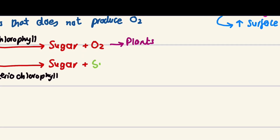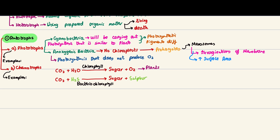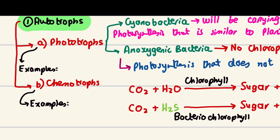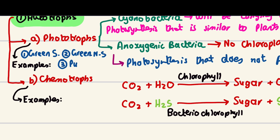Remember that sulfur is produced as a byproduct. For examples of anoxygenic photosynthetic bacteria that commonly appear in exams: green sulfur bacteria, green non-sulfur bacteria, and purple sulfur bacteria. That's all for phototrophs — pretty simple.